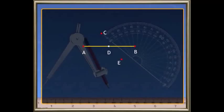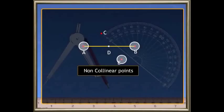Look at this figure. So, which points are not collinear? Yes, A, C and B and A, E, B are not collinear.